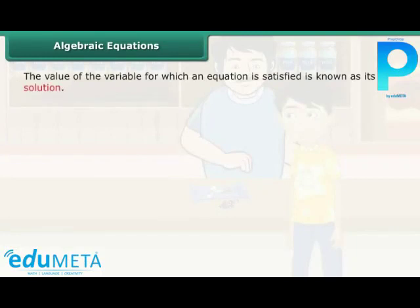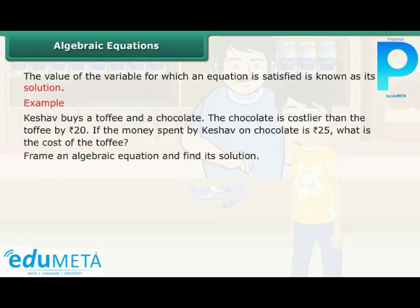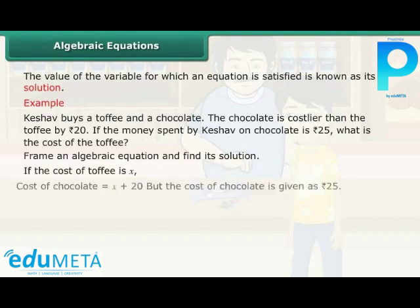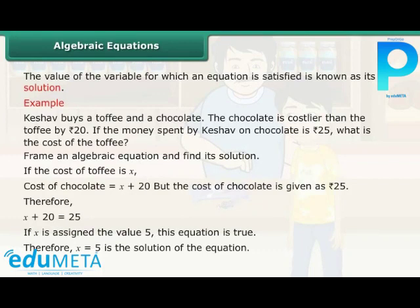The value of the variable for which an equation is satisfied is known as its solution. Keshav buys a toffee and a chocolate; the chocolate is costlier than the toffee by 20 rupees. If the money spent on chocolate is 25 rupees, what is the cost of the toffee? If the cost of toffee is x, then x plus 20 equals 25. This equation is true when x equals 5. Therefore, the cost of the toffee is 5 rupees.